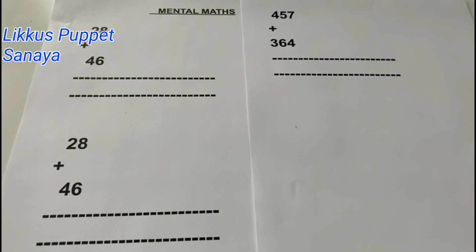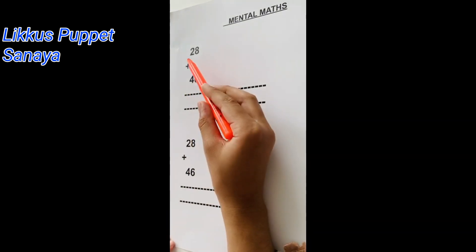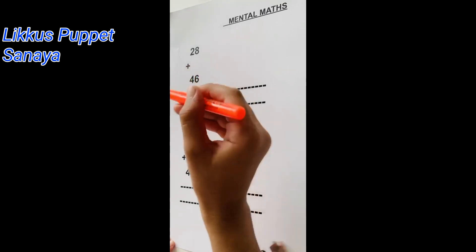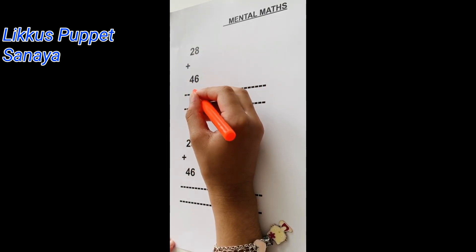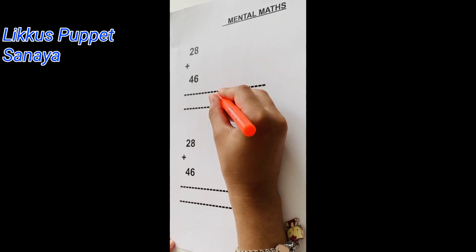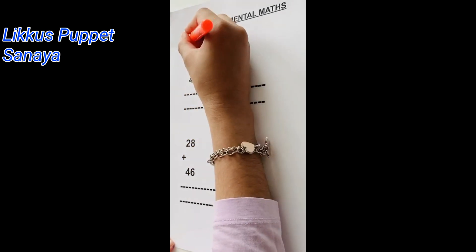Now I have two problems. Let's start with the first problem. So normally we would do it so that we start from the 1's place and add 8 plus 6. That would be 14. And we would write 4 down and carry forward the 1 to the 10's place.